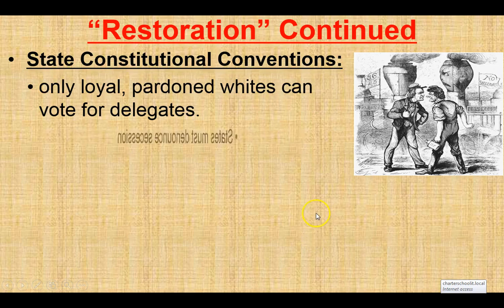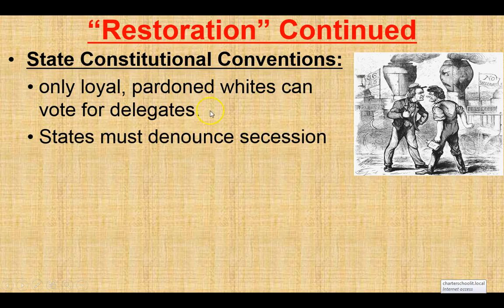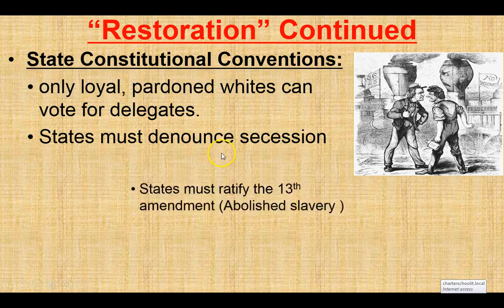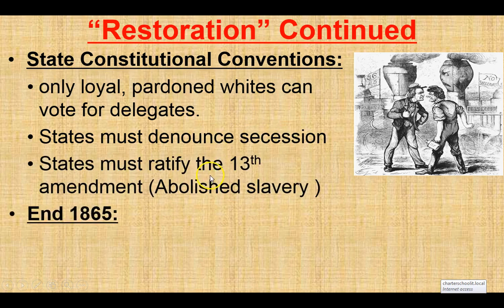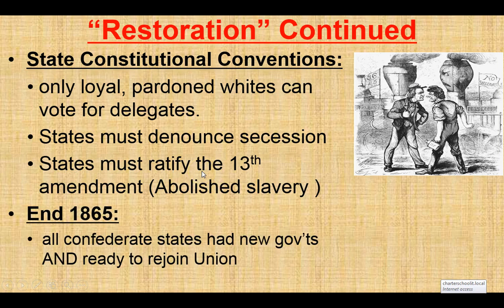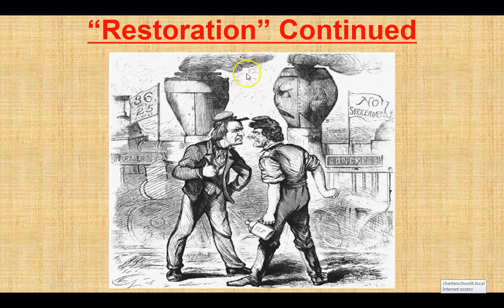Once that happens, state constitutional conventions could be established, and only loyal pardoned whites can vote for delegates — meaning former Confederates could return to the same positions they held before the secession and before the war. To Radical Republicans, that's rewarding them for bad behavior. We need new people with new thinking more like ours. The states must ratify the 13th Amendment abolishing slavery. By the end of 1865, every Confederate state, with the exception of Texas, was ready to come back into the Union and have representatives in Congress — and the Radical Republicans said they would have none of it.